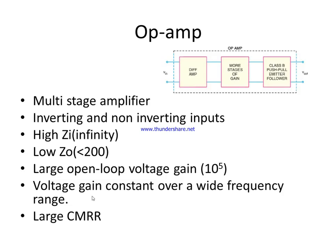The common mode rejection ratio (CMRR) must also be very high for a good op-amp. A high CMRR means the op-amp has a very good ability to reject common-mode signals, that is, unwanted noise signals. For practical cases, CMRR should be greater than 90 decibels. These are some common properties associated with op-amps.